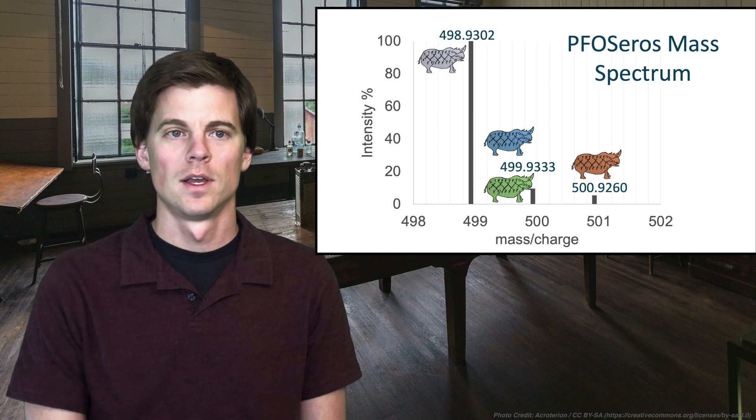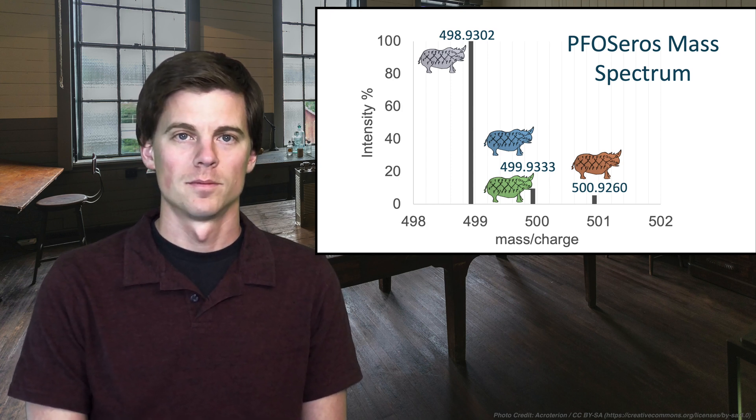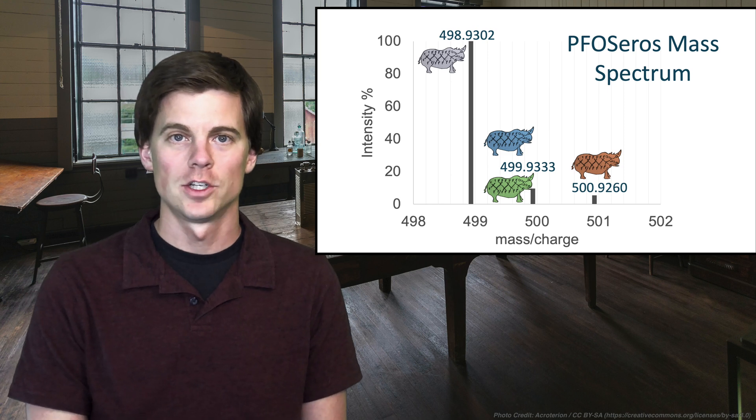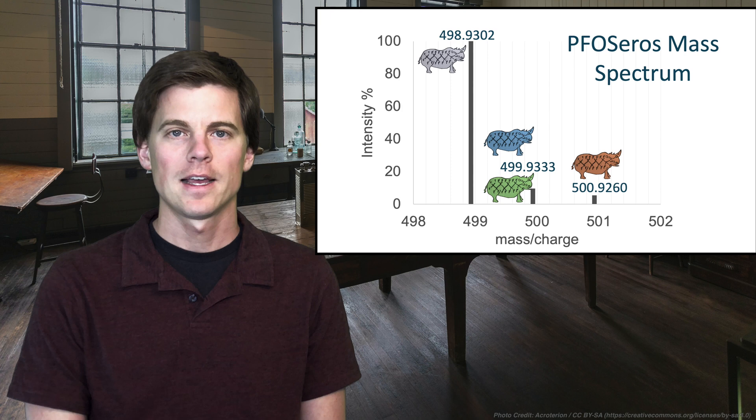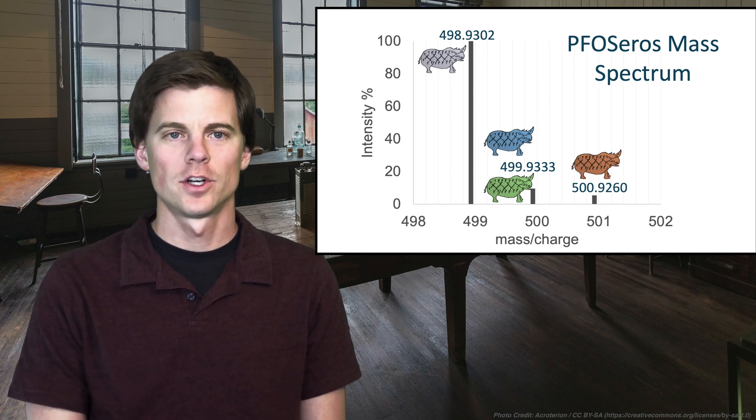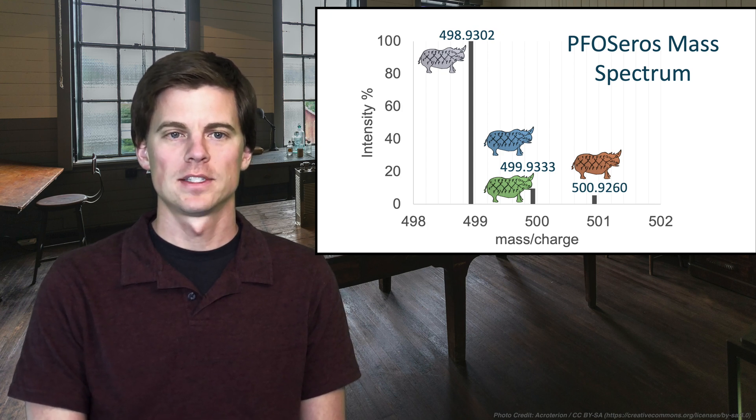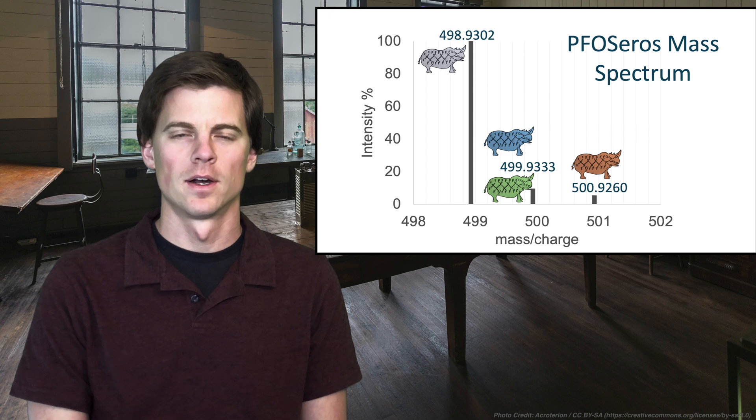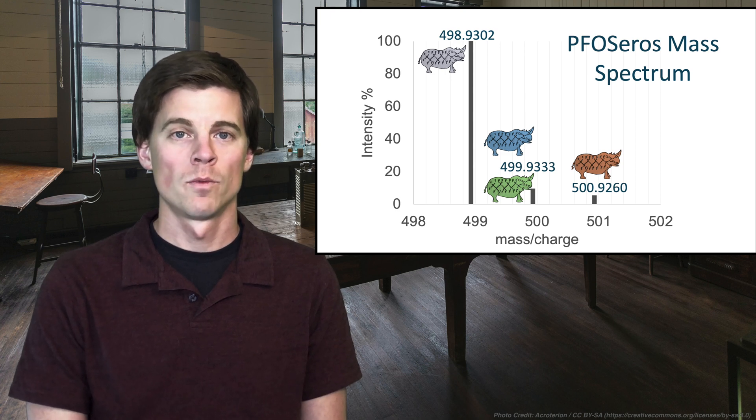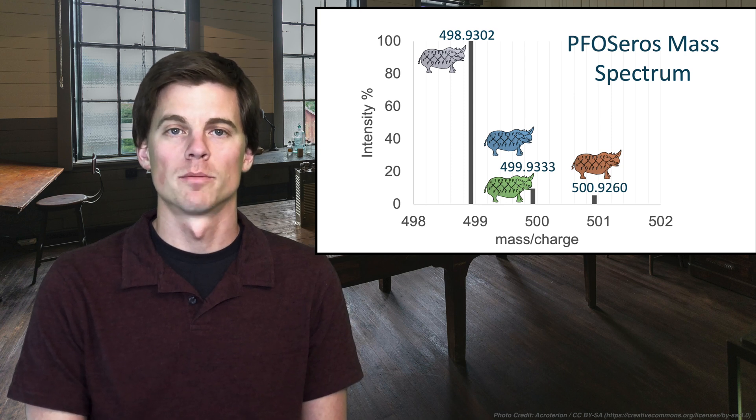And even to the point where if we now have an unknown at a different mass, but we see this certain characteristic ratio of the plus one to the plus two at different masses that can help us determine, back calculate what the formula is. So this is just a little introduction into PFOS mass spectrometry. Hopefully this makes sense to you. It helps you understand a little better why there's more than one mass, like why more than one mass shows up. It's all about probability. It's all about a certain percentage having a certain separate mass.